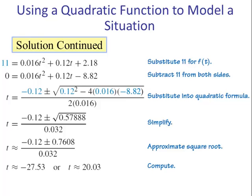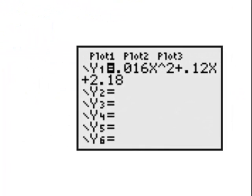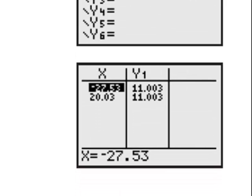Let's verify these solutions. We put the equation in y1, and using the table feature, when x = -27.53, we have something very close to 11. And when x = 20.03, again we have something very close to 11.